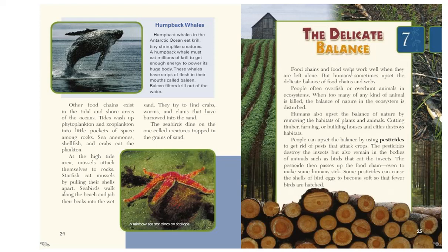The delicate balance. Food chains and food webs work well when left alone, but humans sometimes upset the delicate balance. People often overfish or overhunt animals and ecosystems. When too many of one kind of animal is killed, the balance of nature and the ecosystem is disturbed. Humans also upset the balance by removing habitats — cutting timber, farming, or building houses destroys habitats. People can also upset the balance by using pesticides to get rid of pests that attack crops. The pesticides destroy the insects but also remain in the bodies of animals such as birds that eat the insects, and then pass up the food chain, even making some humans sick. Some pesticides can cause the shells of birds' eggs to become soft so that fewer birds are hatched.